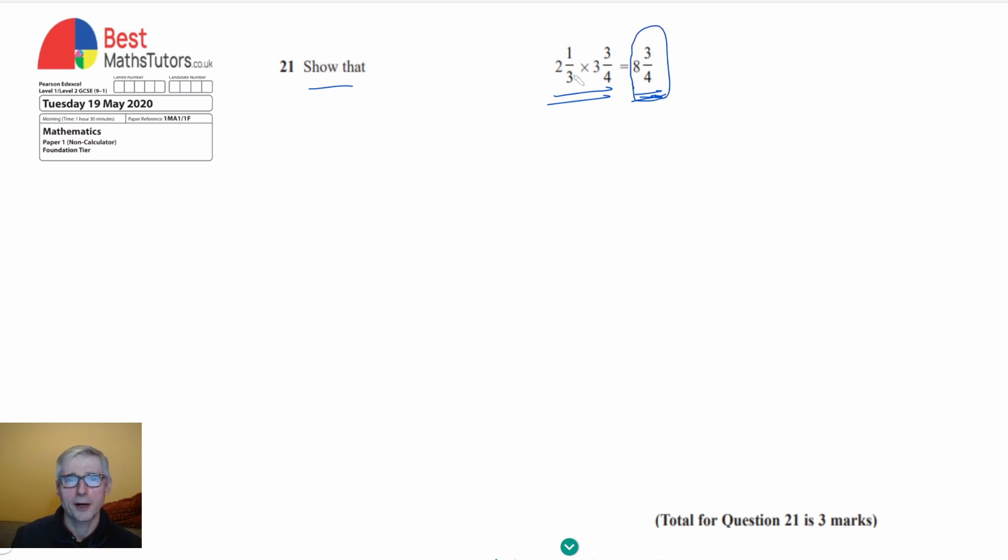So I'm going to start by writing the left hand side as top heavy fractions. I'm going to convert each one of these fractions into a top heavy fraction. So if I start with 2 and 1 third, then I can do that by times in the bottom of the fraction with the whole number. So times there and then adding the result to the top of the fraction. So if I go 3 times 2 that will give me 6 plus 1 is 7. So that's the top of the new fraction and then the bottom still stays as it is. So that is a 3. So that's the 2 and 1 third written as a top heavy fraction. Another word for it is an improper fraction.